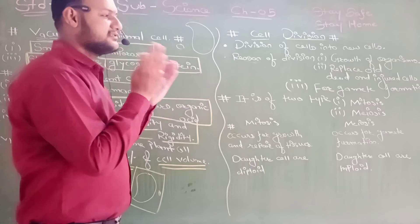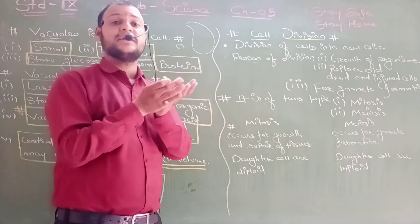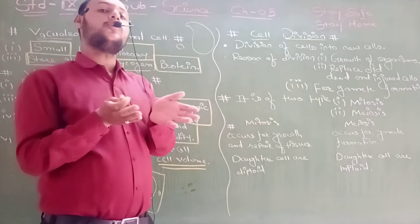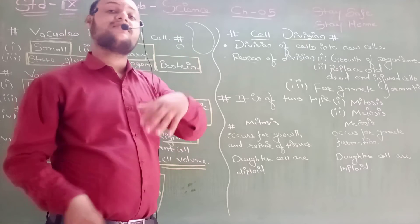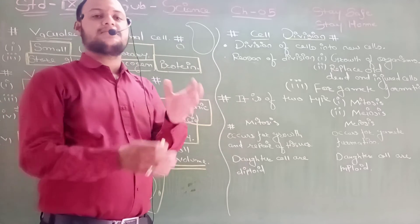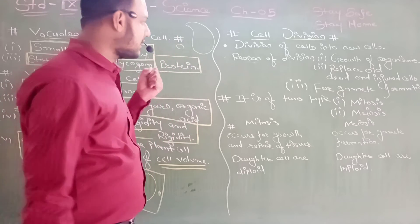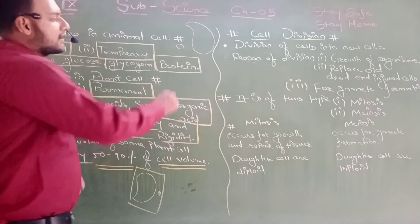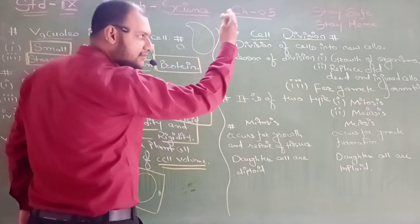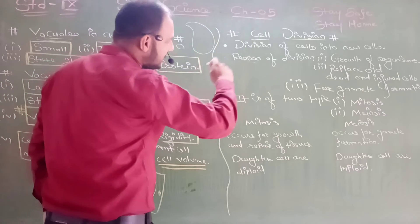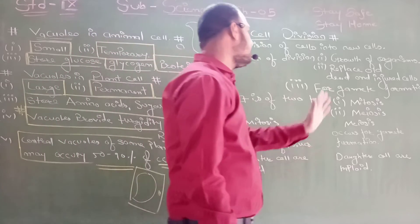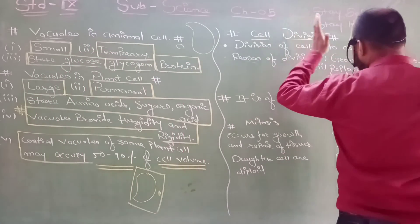A group of cells makes tissues, a group of tissues makes organs, and a group of organs makes a human being. So if the cell does not divide, so many cells cannot be produced. Cell division is very, very important.